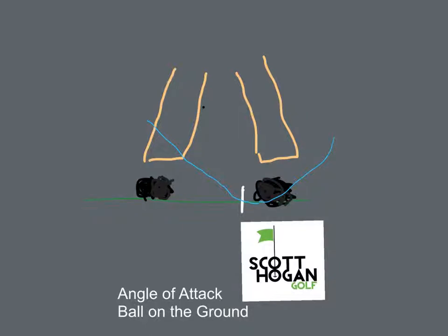The swing really represents an arc where you're going to see the club start to work its way up. It's going to go down — you want to strike the ball when it's on its way down — and then it's going to start working its way back up. The whole purpose is to actually get the club driving down under the ball. You're going to trap the ball a little bit, but it's to get the club and the center of gravity of the club driving down.